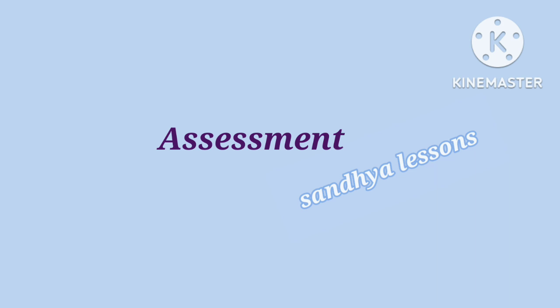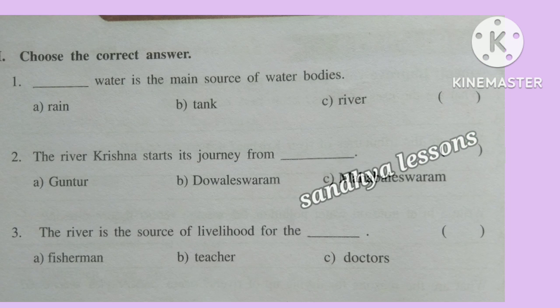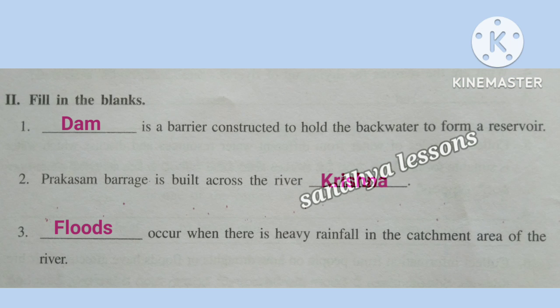Assessment. First, choose the correct answer. First: Rainwater is the main source of water bodies. Second: The river Krishna starts its journey from Mahabaleshwar. Third: The river is the source of livelihood for the fisherman. Second, fill in the blanks. First blank: A dam is a barrier constructed to hold the backwater to form a reservoir. Second blank: Prakasam barrage is built across the river Krishna. Third blank: Floods occur when there is heavy rainfall in the catchment area of the river.